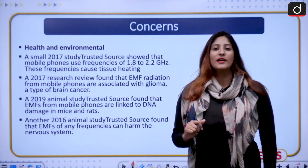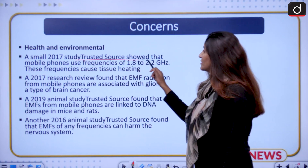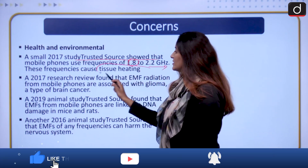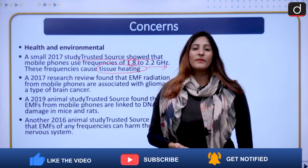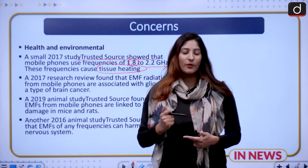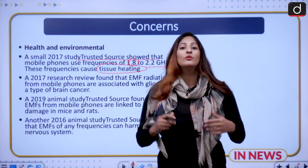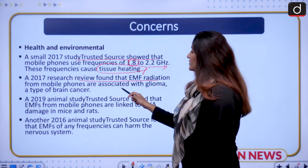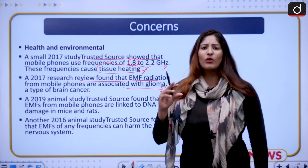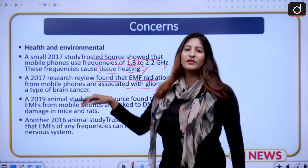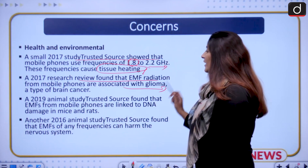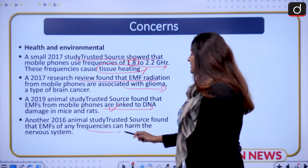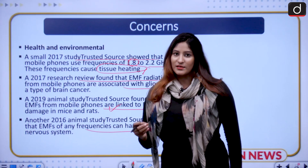There are health and environmental concerns related to 5G radiation. A 2017 study showed that mobile phone frequencies of 1.8 to 2.2 GHz can cause tissue heating — when skin absorbs electromagnetic radiation, leading to rising temperature of the body and brain, which may cause longer-term damage. A 2017 research review found that EMF radiation from mobile phones is associated with glioma, a type of brain cancer. A 2019 animal study found EMFs linked to DNA damage in mice and rats, and a 2016 study showed EMFs of any frequency can harm the nervous systems of animals.